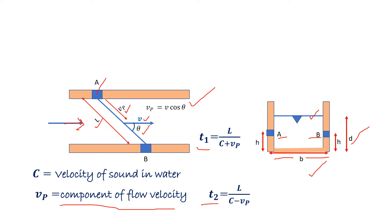So T2 can be written as L divided by C minus Vp. Here it is getting subtracted because both are in opposite direction. Velocity of sound is in this direction and Vp is in opposite direction, so it is getting subtracted.